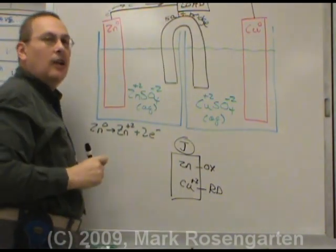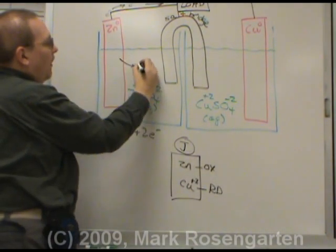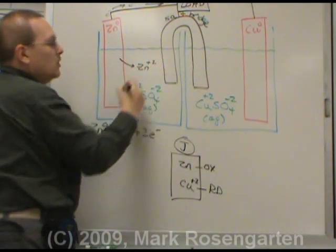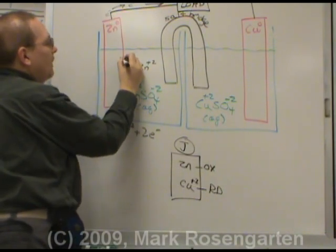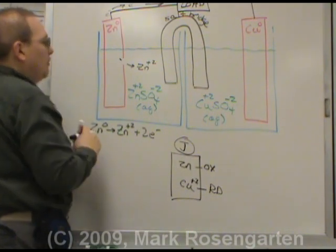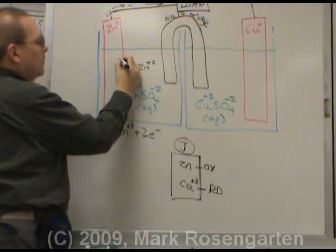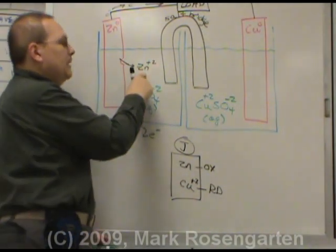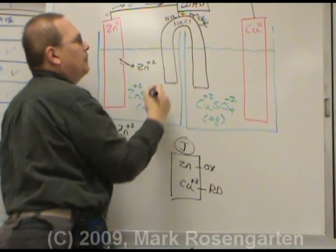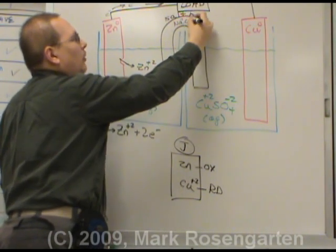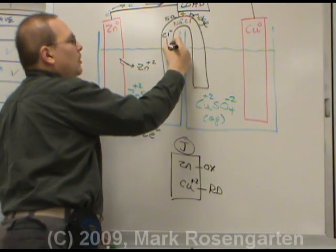In the meantime the zinc strip dissolves and the zinc plus two goes into solution. Every zinc that leaves makes the zinc strip that much smaller. When the zinc plus two goes into solution, if we're using sodium chloride as our salt bridge, the negative chloride ions go through the salt bridge in this direction to help cancel out the zinc.